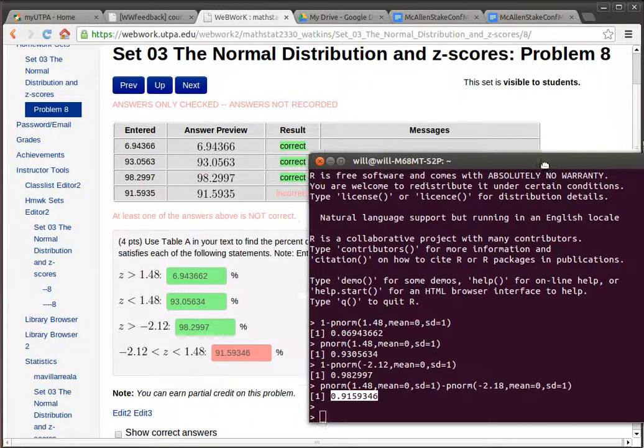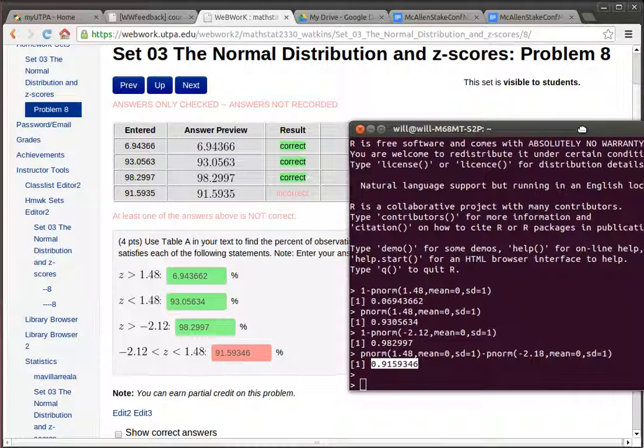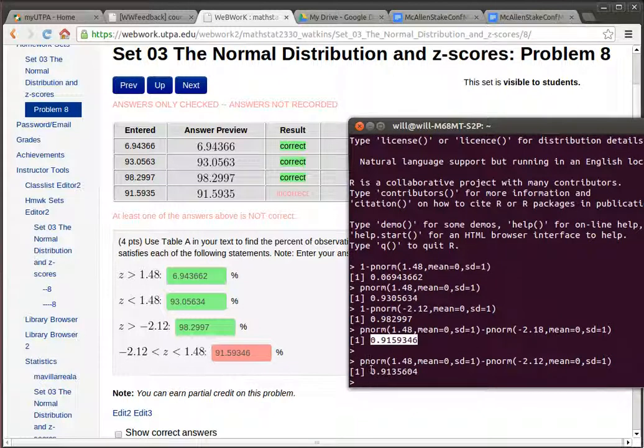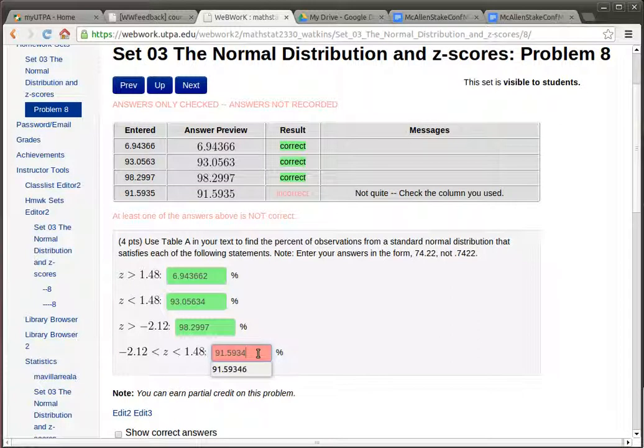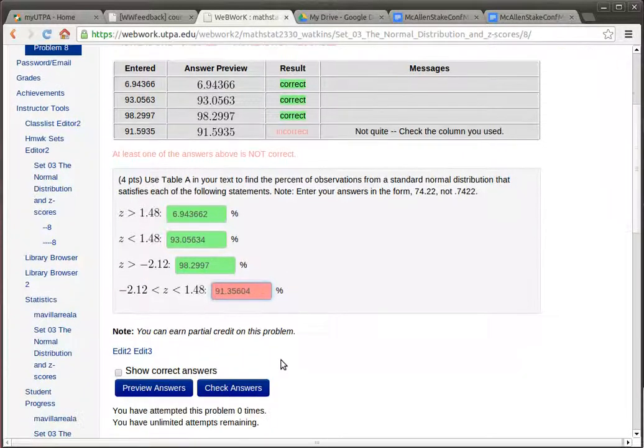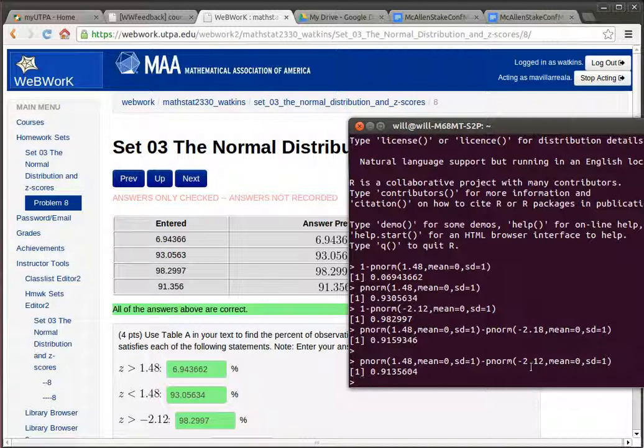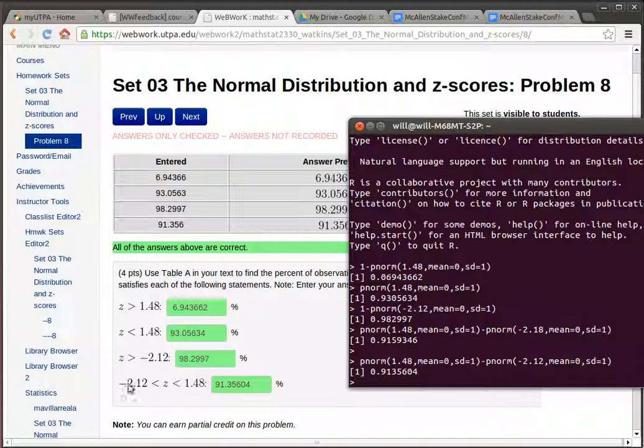It doesn't like that answer. Check the column you used. See there. I typed this in wrong. It wasn't negative 2.18, it was negative 2.12. And it was 1.48 on the high side. So let's see what that one does. I need to copy that and paste it into here. The decimal point has to move 2 to the right. Check my answer. Yeah. My problem before was that I'd used negative 2.18, and this problem was looking for between negative 2.12 up to 1.48. I hope that helps.